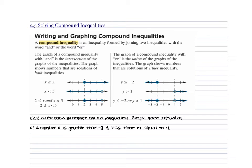You have to be careful with the wording or the way the inequality is given. With an AND inequality, you'll either see the word 'and' in between the two inequalities, or you'll see it written as '2 ≤ x < 5.' They mean the same exact thing. An OR inequality will always be separated with the word 'or.'